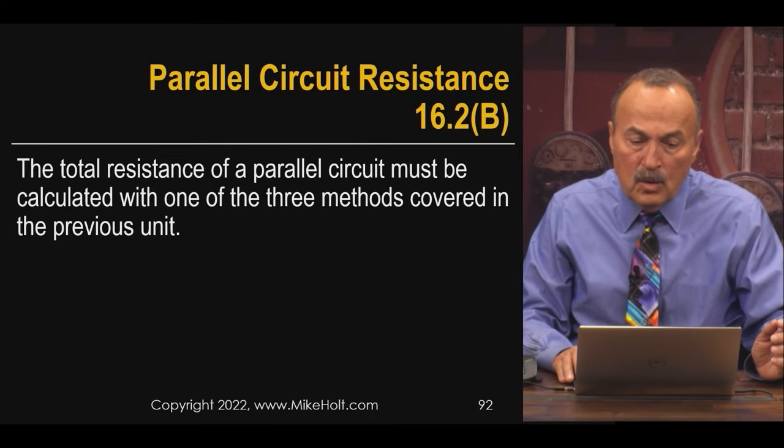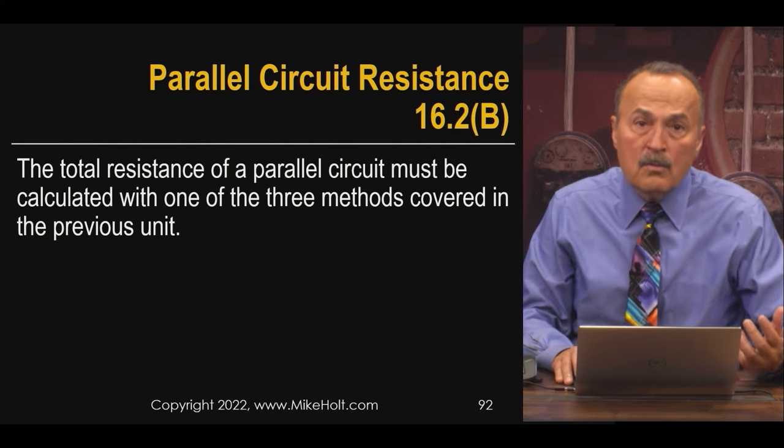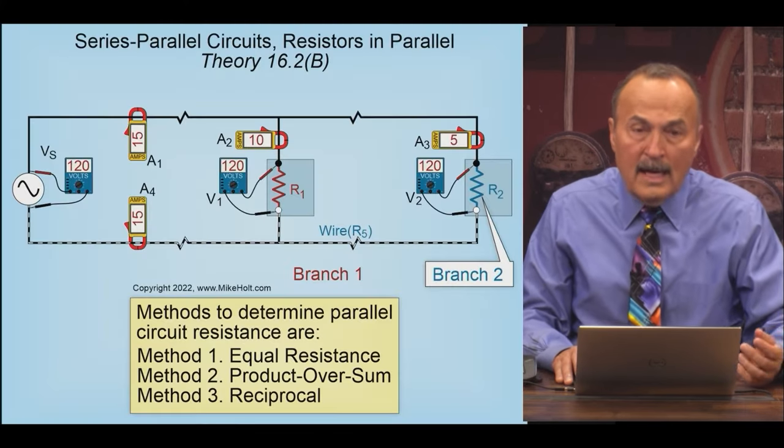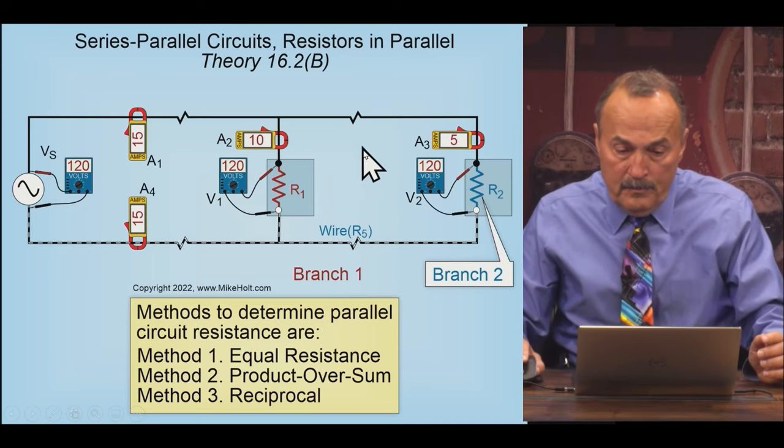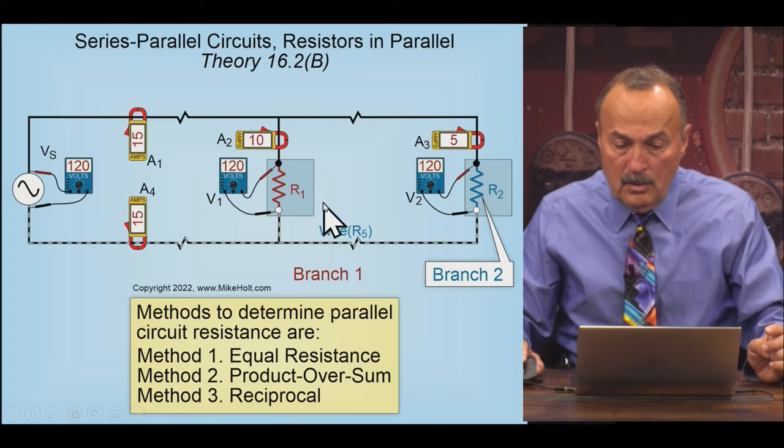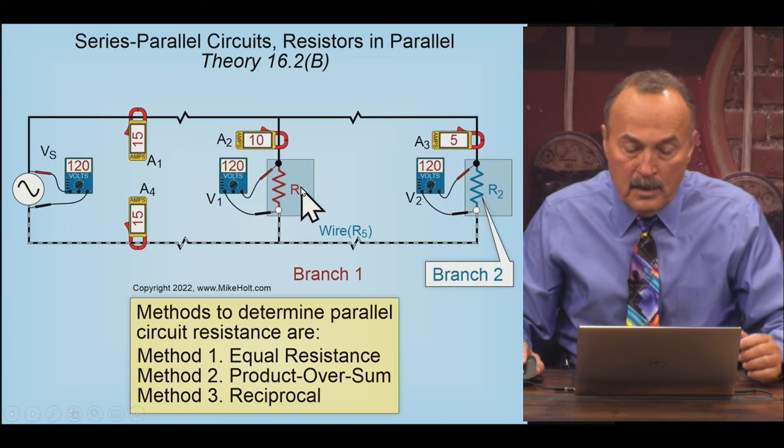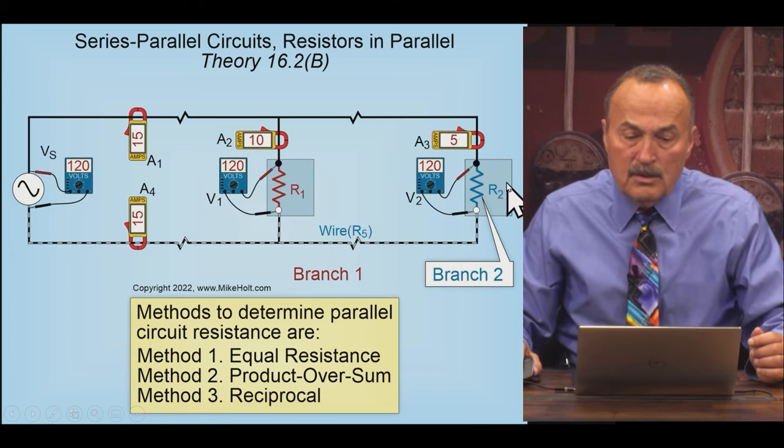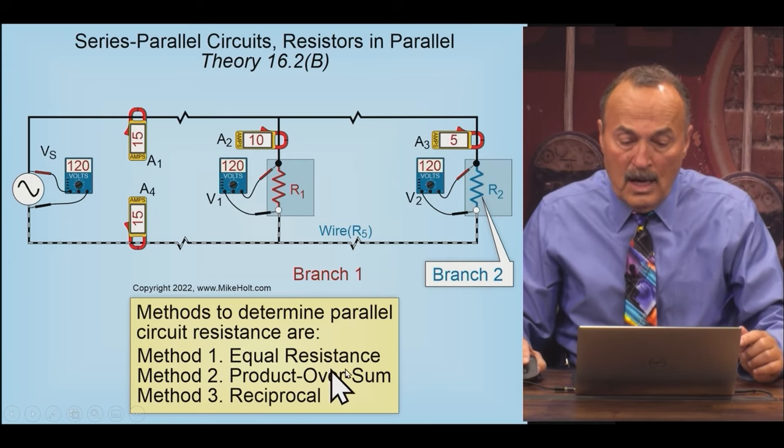Parallel circuit resistance. The total resistance of a parallel circuit is calculated in one of three methods. We had the equal resistance method, which is fine if they're all the same value. I need to put a value here at R1 and a value for R2. So if they're both the same value, well then, well, we can't put a value because we're trying to show a method. If they're both the same value, then you take the resistance of the one resistor divided by the number of units.